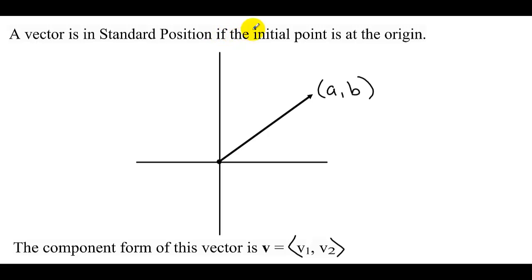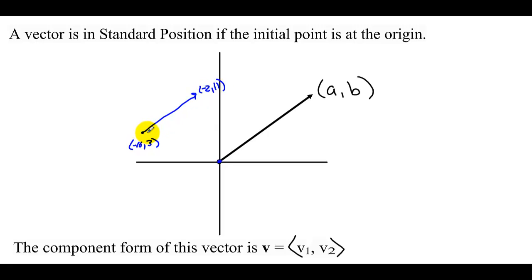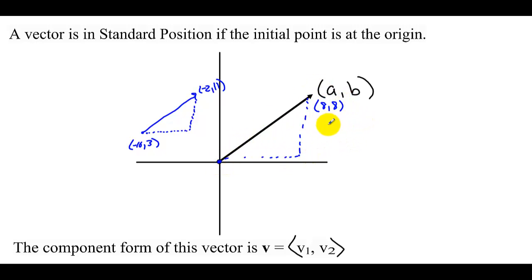A vector is in standard position if the initial point is at the origin. Say we had a vector out in space with initial point negative 10, 3 and terminal point negative 2, 11. If we drag this initial point to the origin at 0, 0, to get to the other point we'd have to go 8 units to the right and 8 units up. When a vector is in standard position we only use one point to denote it, using chevrons to indicate it's in standard position.